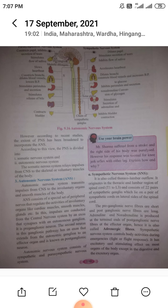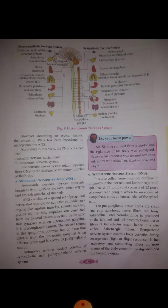The autonomic nervous system consists of two types: sympathetic and parasympathetic. The sympathetic nervous system is also called thoracolumbar outflow, and the sympathetic system consists of thoracolumbar outflow.